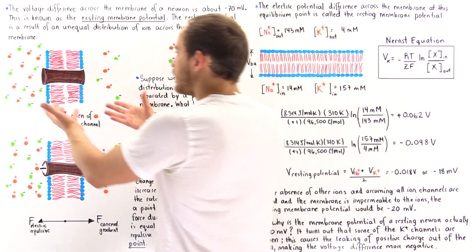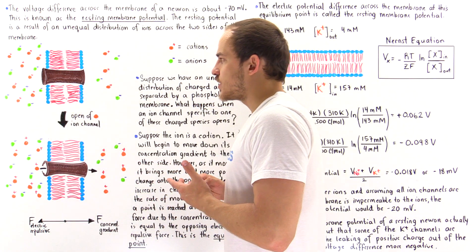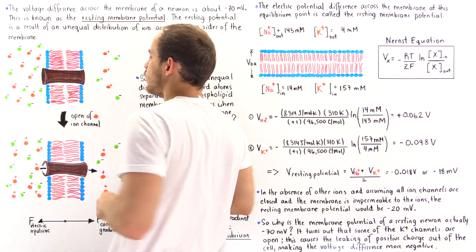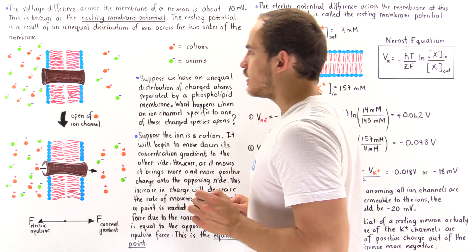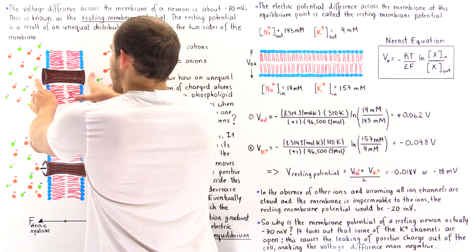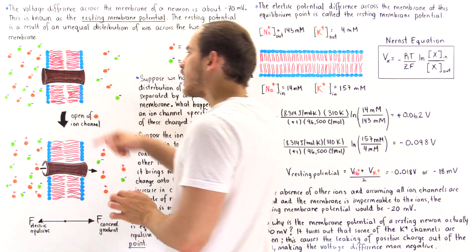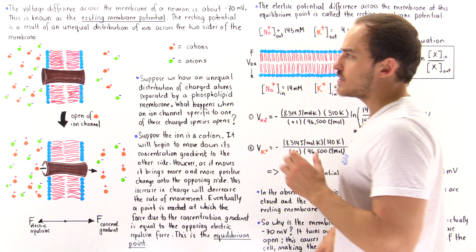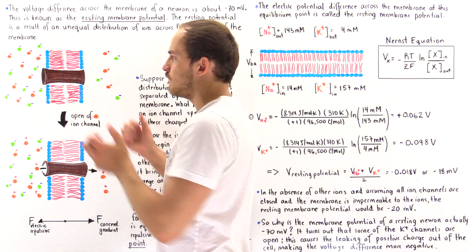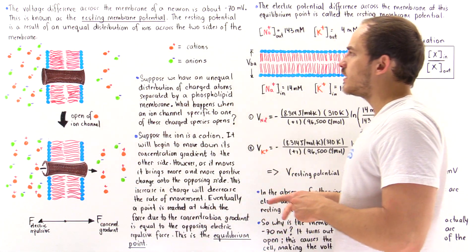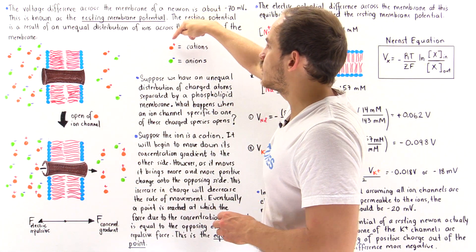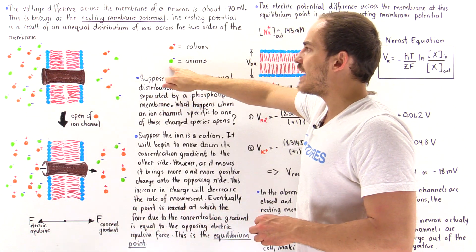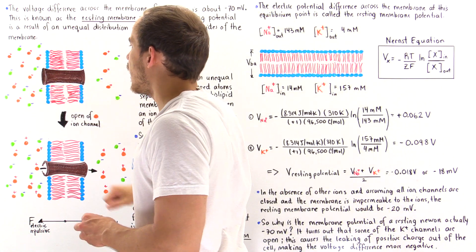Let's begin by taking a look at the following diagram. This is our phospholipid bilayer membrane, and in that membrane we have some type of ion channel. This ion channel in this diagram is closed, and it will not allow the movement of any ions. We're focusing on two different types of ions: positively charged orange ions and negatively charged green ions.